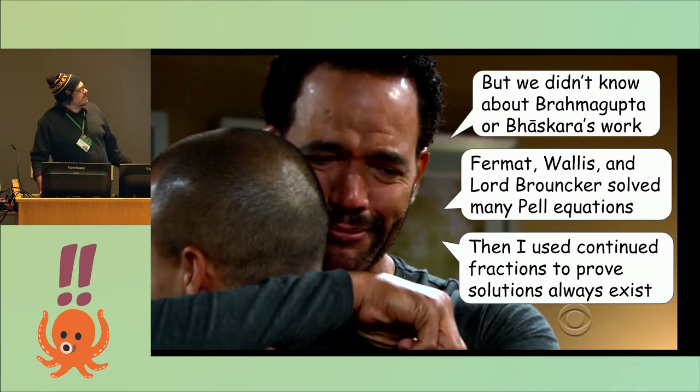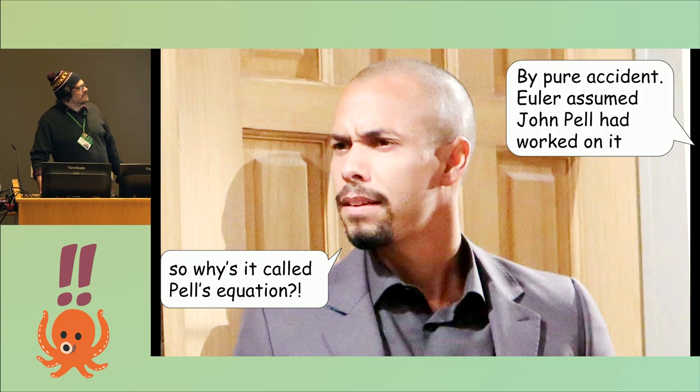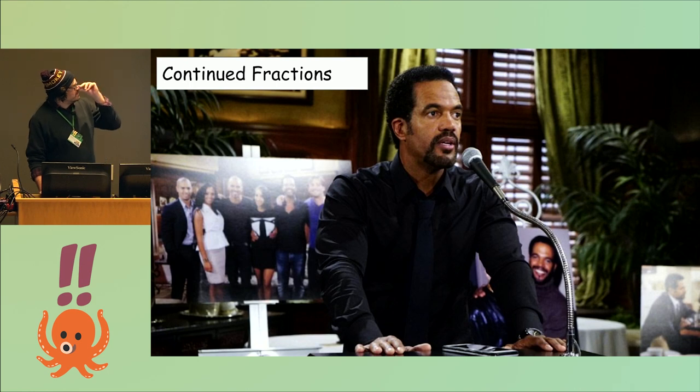You might be wondering, why are they called Pell equations? It was just a mistake. But once things get named, they just stay. So what's a continued fraction? You start with the number bigger than one, subtract the integer part, then you invert it so it's bigger than one again, and you rinse and repeat.